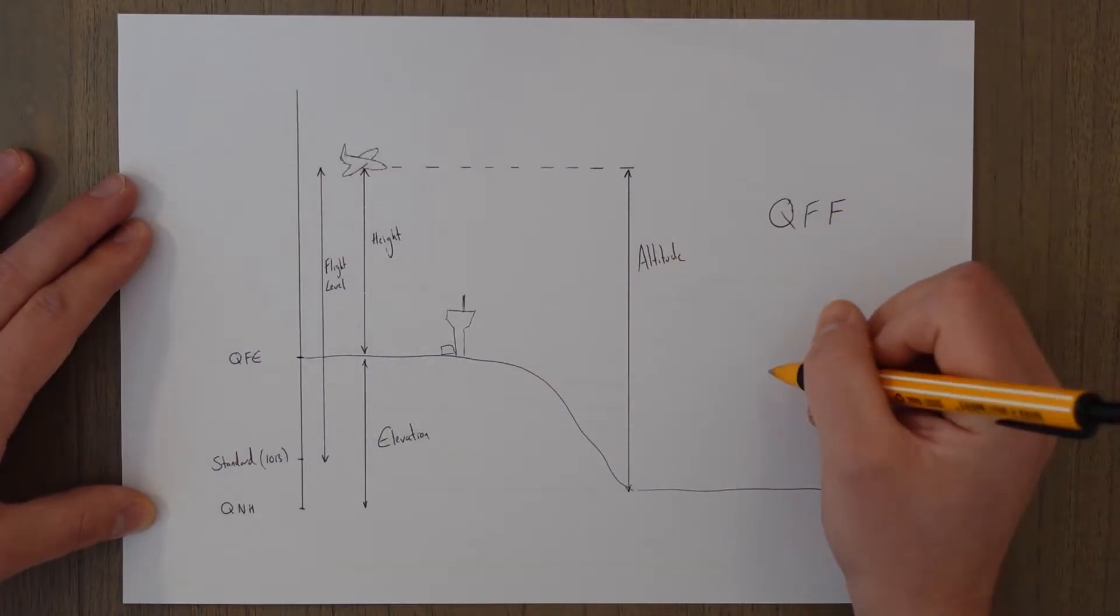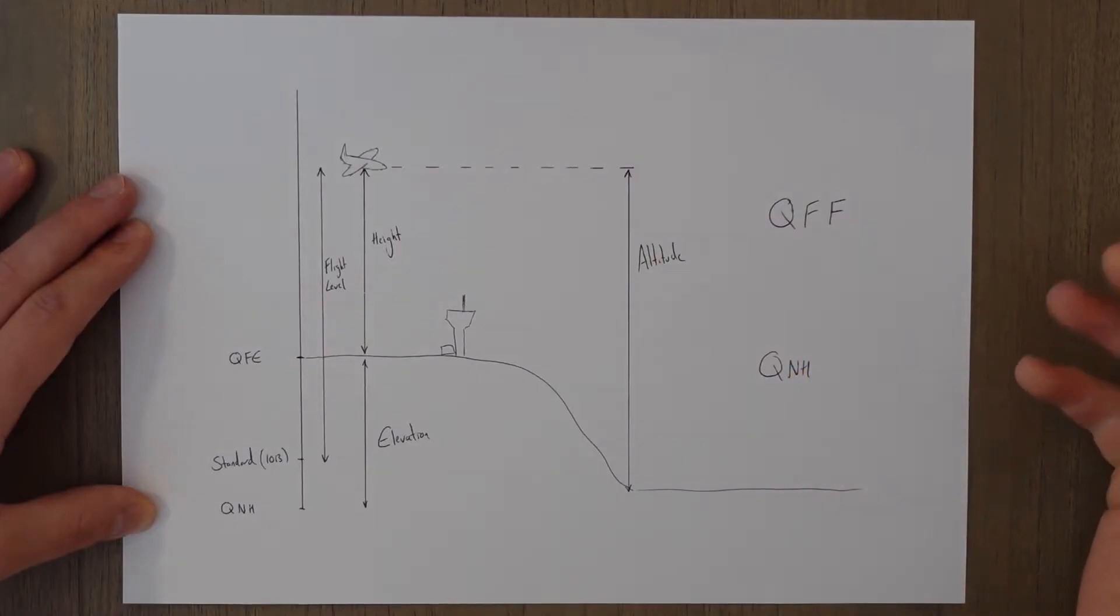corrected down to the sea level pressure setting for the actual day's conditions. This is different to QNH because QNH uses the standard one hectopascal every 27 feet, whereas the QFF